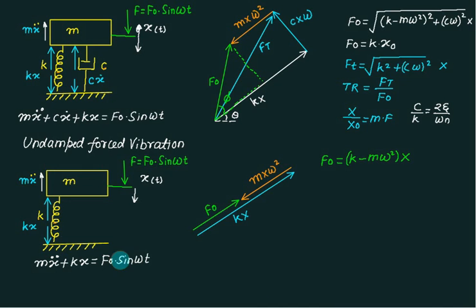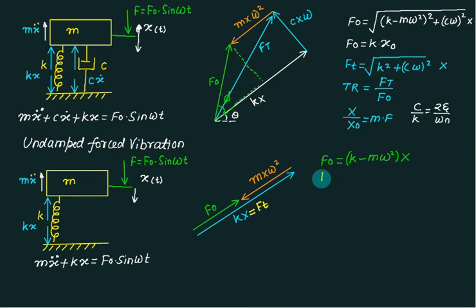How much force is transferred to the ground? Is it Kx? So this quantity itself equals F of T. What is F of T? F of T simply equals K multiplied by X.